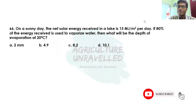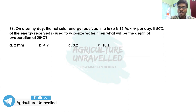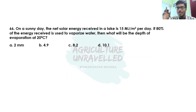Hi guys, welcome. I hope you are doing well. Here we are continuing our lecture series on irrigation water management. In the last class we completed evapotranspiration, effective rainfall, and different crop water requirement concepts. In this chapter we'll continue that concept and also try to understand different methods used to measure evapotranspiration and effective rainfall.